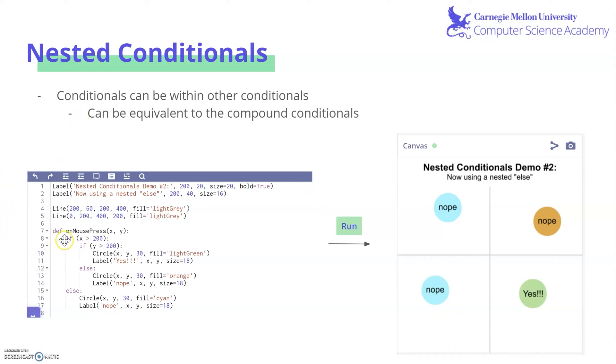So we have this mouse press defined. And there's two main cases when x is greater than 200 and when x is not greater than 200. So here's this line. This is the greater than 200 region. This is the less than 200 region. But on top of that, we also are testing that within the x is greater than 200 region is y greater than 200. If so, draw a light green circle. And here it is. And if it's not, draw an orange circle. And here that is.